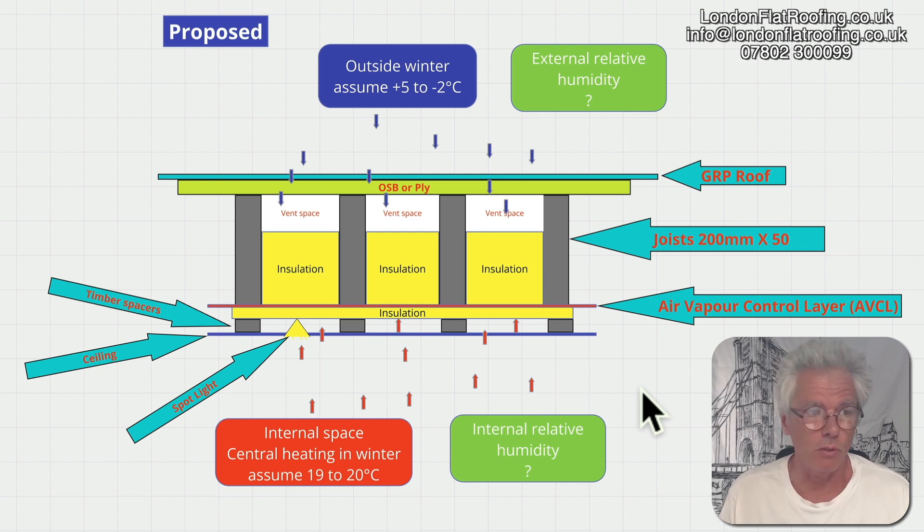Cold roofs used to work really well. There's millions of roofs all over London which are cold roofs and they work, but we've started to change the parameters of what's going on. By changing those parameters, this is not a robust construction anymore, hence why we see them fail.